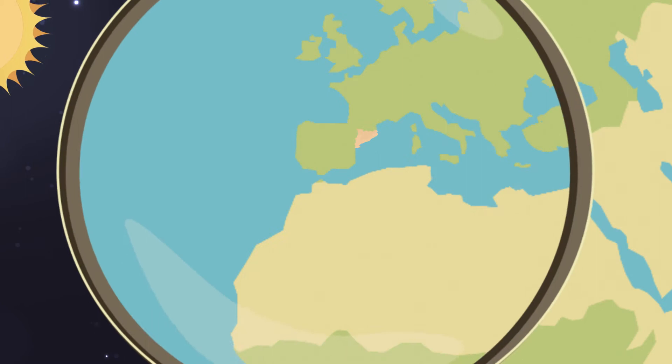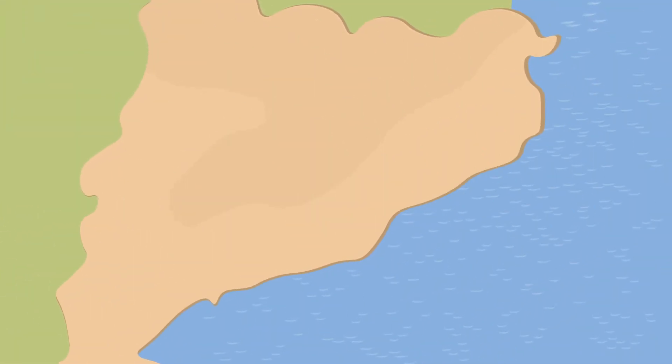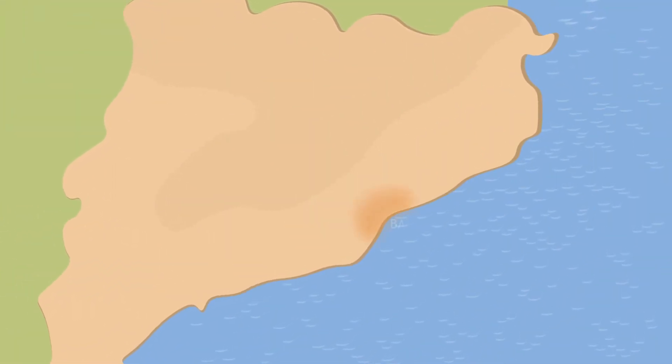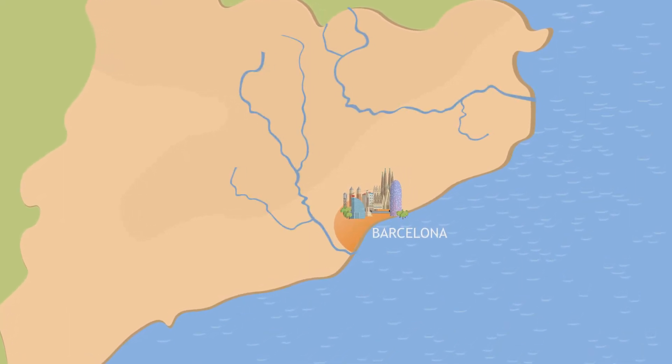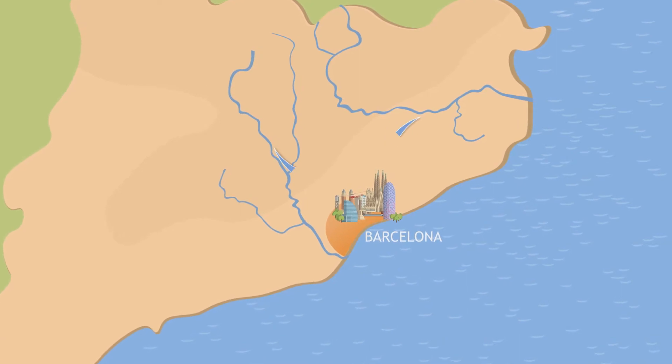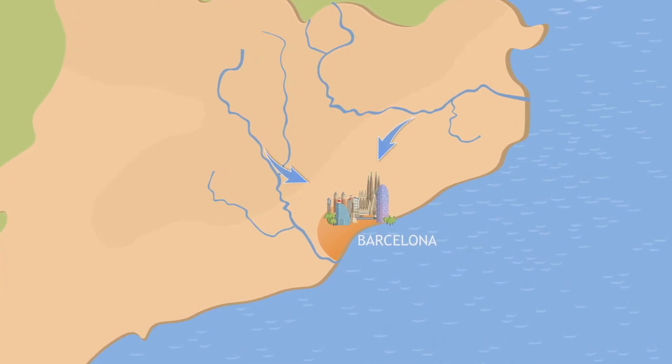In the metropolitan area of Barcelona, the water supply depends mainly on different nearby reservoirs, which are connected to the Terre and Llobregat rivers. However, the total capacity of these reservoirs barely covers the annual demand of the region.